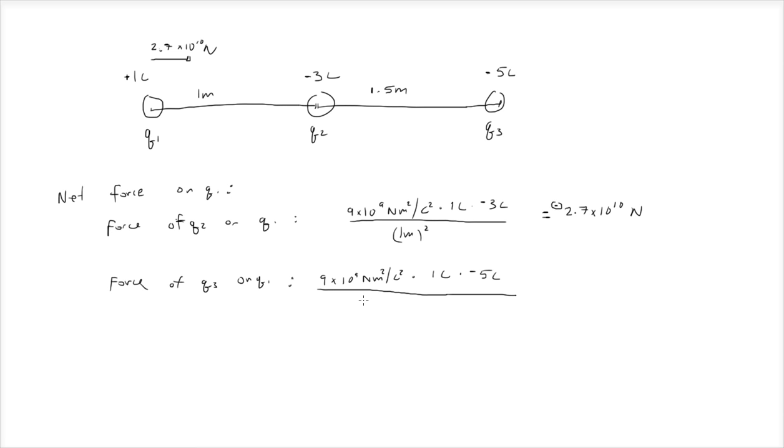Divided by the distance between q1 and q3, which is 2.5 meters. Let's look at the diagram to double check that. We have 2.5 meters squared. That'll be 7.2 times 10 to the 9 newtons.